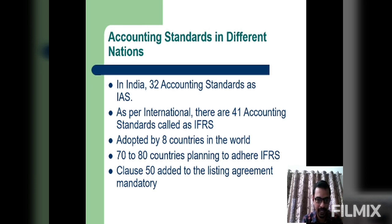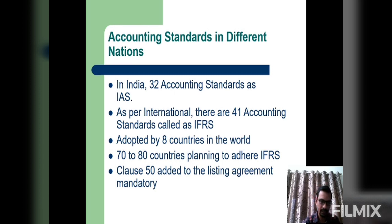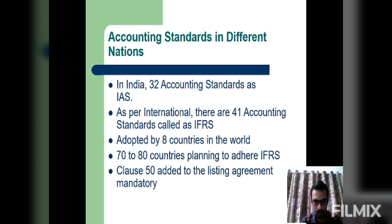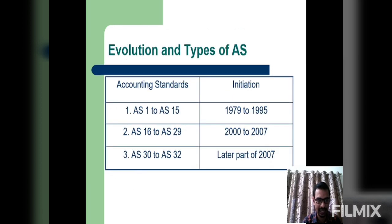IAS has been adopted by 8 countries in the world. For the following countries, 70 to 80 countries are planning to adhere to IFRS. Information is also available through the listing agreement and company accounts.